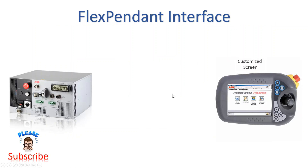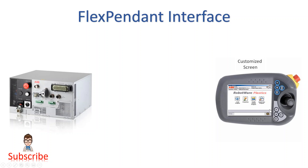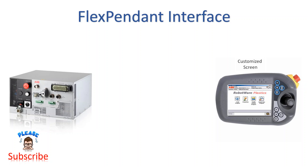Now I want to talk about the FlexPendant interface. This is the controller FlexPendant. It's connected via cable. It already has base screens and base function screens like jogging window, program editor, program data — so many basic screens and menus in there.